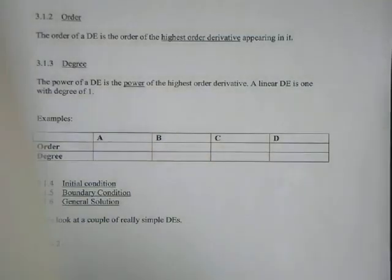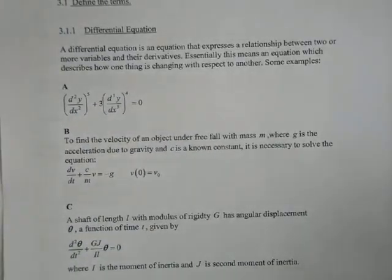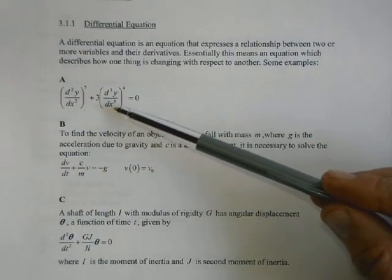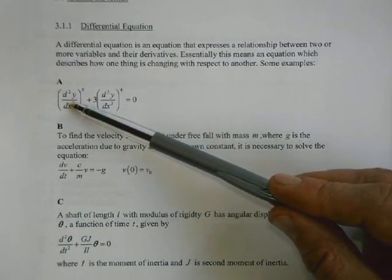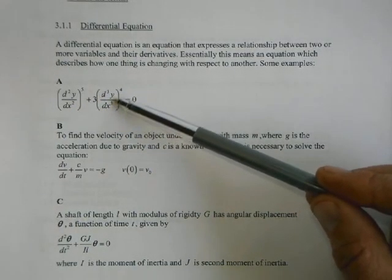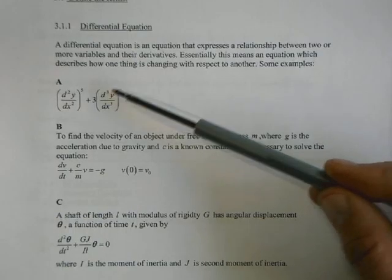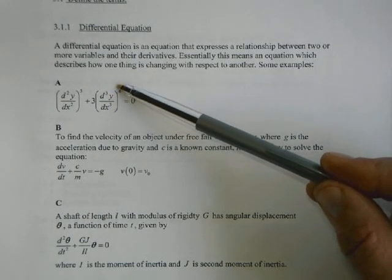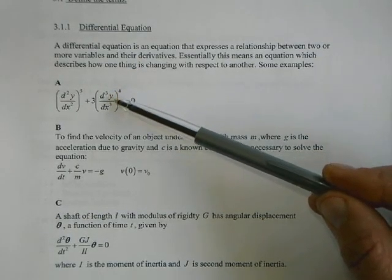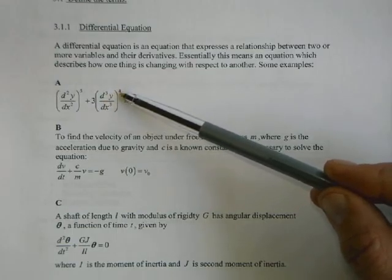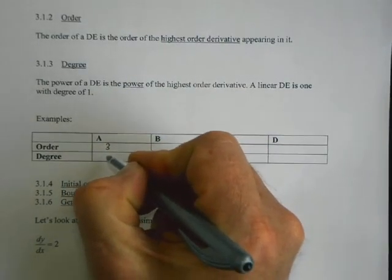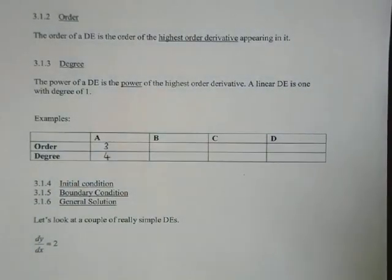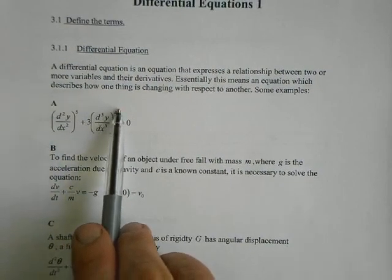So here's our example, looking at the first one. The order is the highest order derivative. So this is the second derivative, and this is the third derivative. So the order of this is going to be three, and the power associated with that gives us the degree. So this is a third order, fourth degree differential equation. It's a third order because it had a third derivative, and it's a fourth degree because it had that third derivative to the power of four.